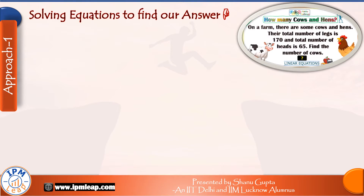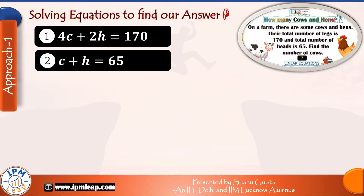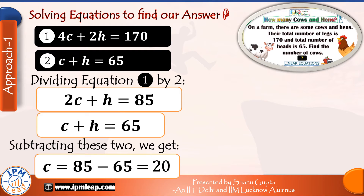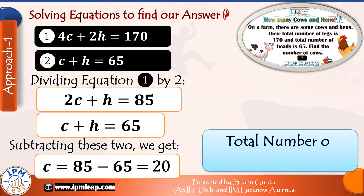Now we just solve these two equations together to find the value of c, which stands for the number of cows. A simple way to equate the coefficients is to divide the first equation by two on both sides, giving us 2c plus h equals 85. Next, we subtract the second equation from this to eliminate h and find c. c equals 85 minus 65, which equals 20. So that's our answer — the total number of cows is 20.